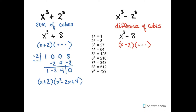I found the factorization: x plus 2 is multiplied by x squared minus 2x plus 4. This second quadratic, x squared minus 2x plus 4, is not factorable further. So the sum of cubes factors to a binomial times a quadratic.